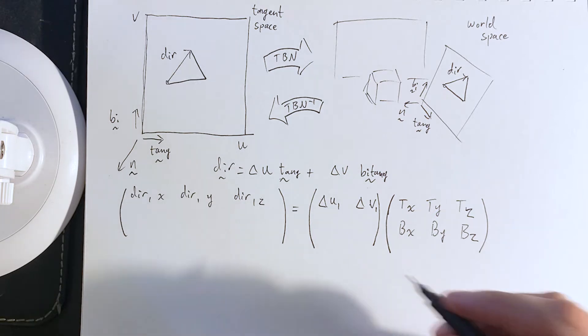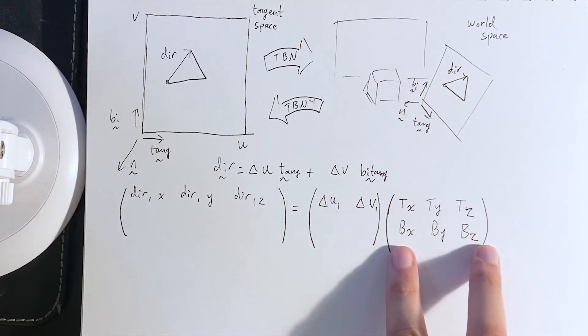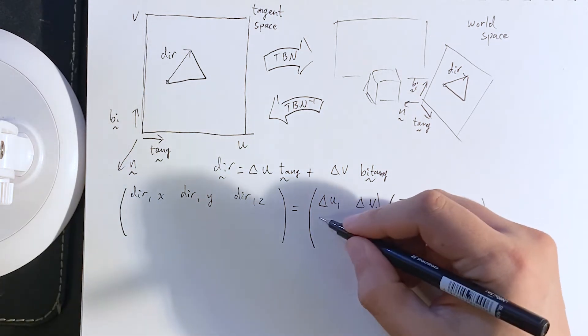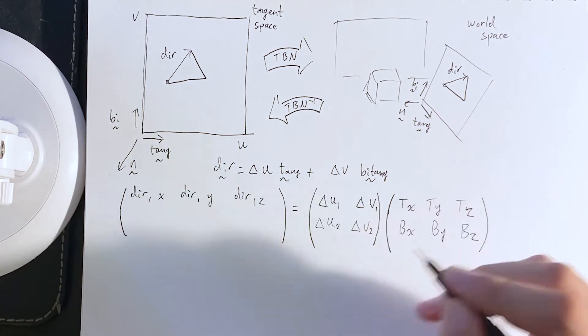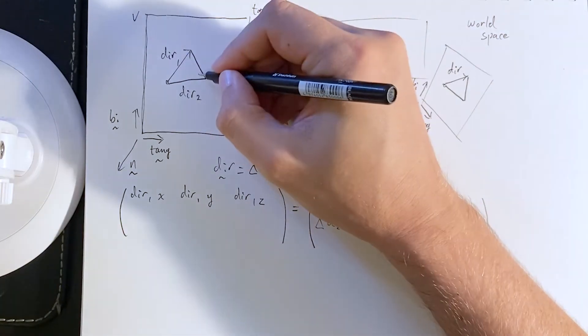Okay. But the goal is to get this tangent and bitangent. We need to know what they are. Now, we can get that if we invert this matrix. And this matrix will be invertible if it's square. So, for that reason, we will add another direction. So, we have like direction one and direction two here as well.